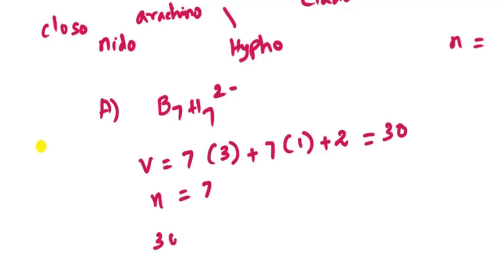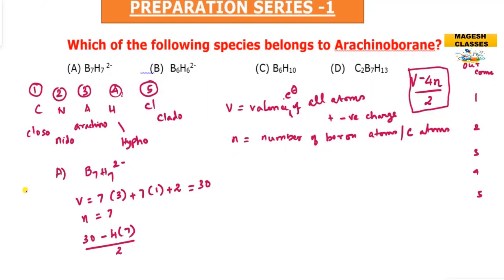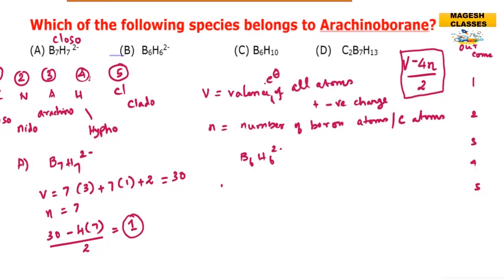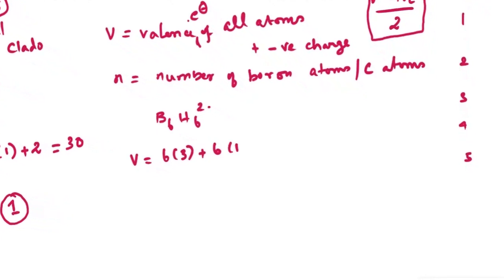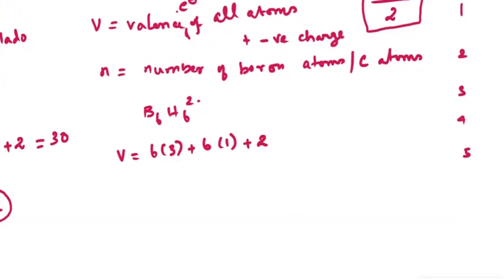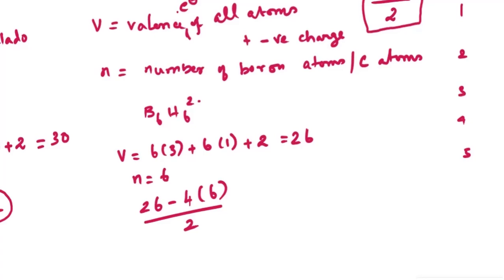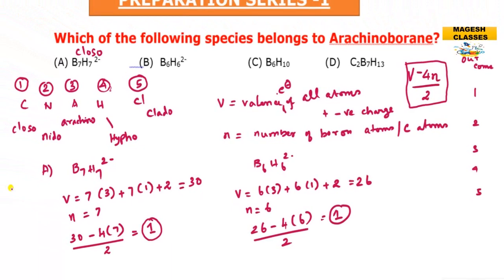Substituting into the expression: V equals 30 minus 4 times 7, divided by 2. That gives us 30 minus 28, which is 2, divided by 2, equals 1. The output value is 1, so this borane is closo type.